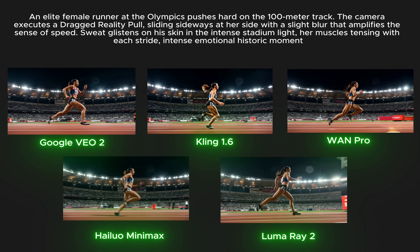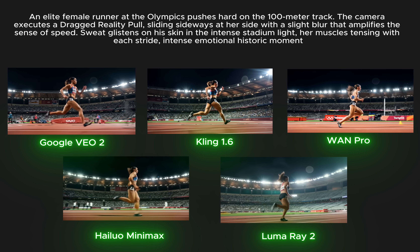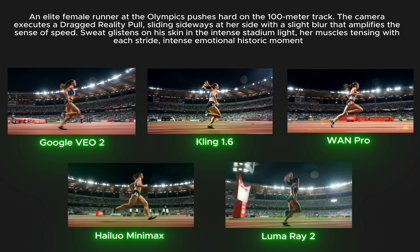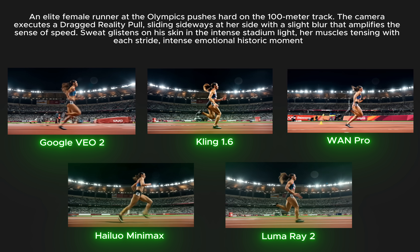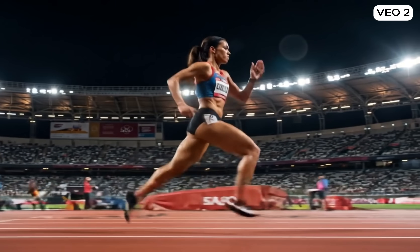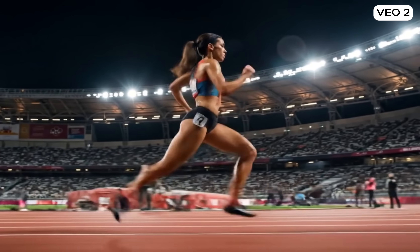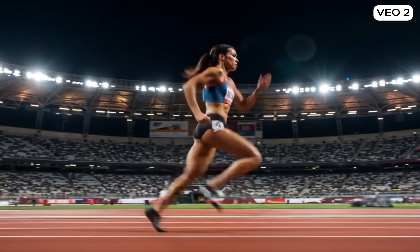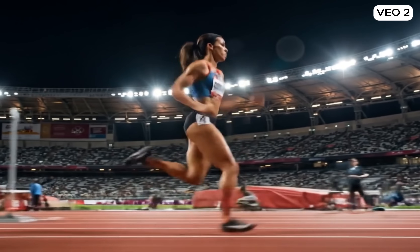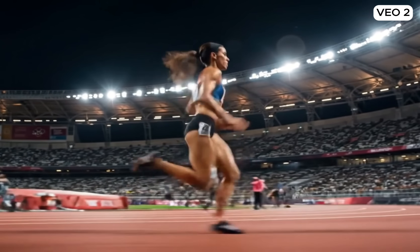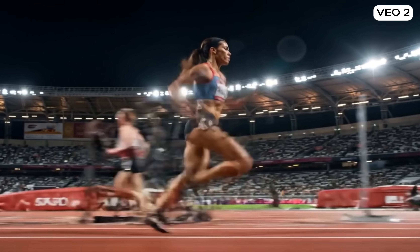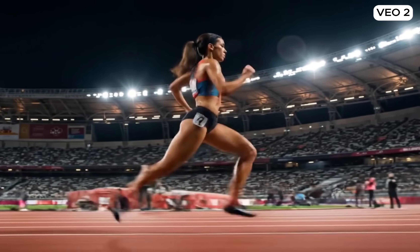In the next challenge, we have a female runner at the Olympics. In this particular challenge, I'm trying to understand the physics understanding of these models — anatomy, and how well they can render human anatomy. Starting with VO2, there are a few coherence issues in both the leg and the upper body. The background quality dropped really significantly — you can almost not see anything else. There is a strong motion blur as asked for. Overall, it's a good result with some coherence issues on the upper body and occasionally in the legs as well.